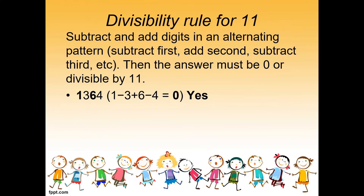Sample: 1364 is our given. Subtract first: 1 minus 3 equals negative 2. Then add: negative 2 plus 6 equals positive 4. Then subtract: 4 minus 4 equals 0. Since the answer is 0, 1364 is divisible by 11.